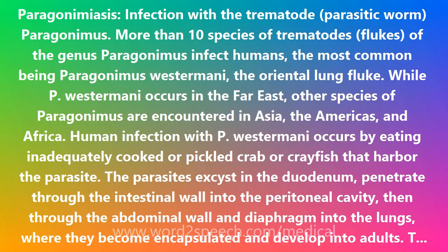Paragonimiasis is an infection with a trematode parasitic worm, Paragonimus. More than 10 species of trematode flukes of the genus Paragonimus infect humans, the most common being Paragonimus westermani, the oriental lung fluke.